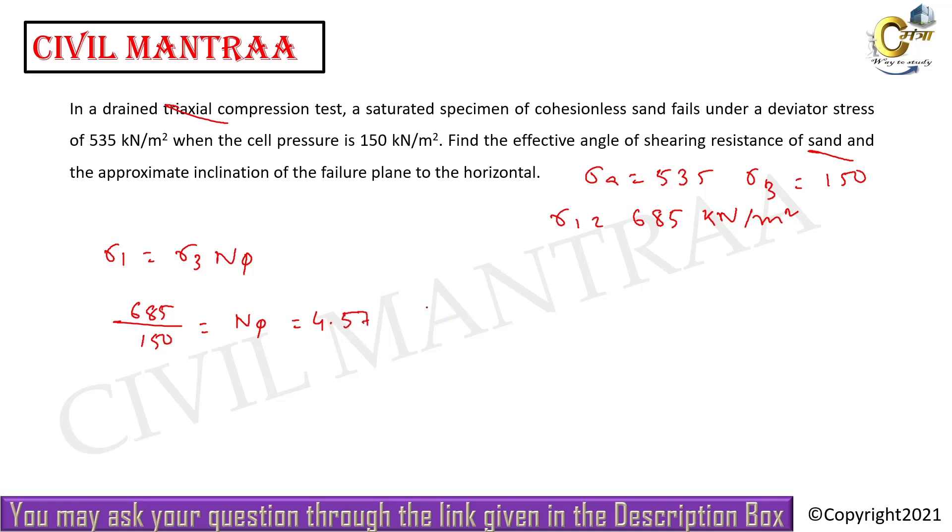Okay, so tan²(45° + φ/2) equals 4.57. So what is the value of 45° + φ/2? This value is 64.55 degrees. So you have to find out what is the value of φ.